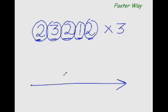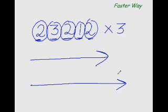I haven't done anything drastically different here. All I've done is a little tweaking to make the existing method go faster. The secret of faster mental math is the ability to multiply from left to right. Your speed will get better and better with more practice.